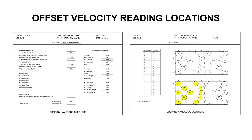Next, measure and mark the offset velocity reading locations 20 through 38, by referencing the coil reading dimensions A through E and M through Q. The same method is used to mark the intersections of the offset velocity reading locations as was used to mark the standard velocity reading locations. The offset velocity reading location markings are a different color to differentiate between the standard and offset velocity reading locations.